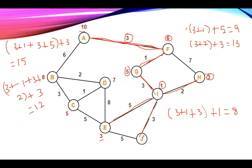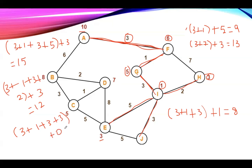Now calculate f(J): g(n) = 3 + 1 + 3 + 3 = 10. Since J is the goal node, its heuristic value is taken as 0, giving f(J) = 10.